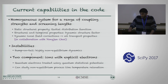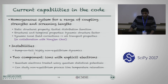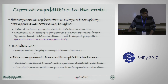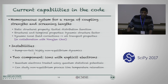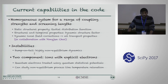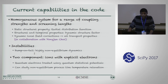The next aspect the code can compute is a bump-on-tail instability, which is a highly non-equilibrium dynamics. Finally, the code can simulate explicit electrons in addition to ions. Realistic plasmas have both ions and electrons, but electrons are difficult to treat due to their quantum nature — the code uses quantum statistical potentials for that. Interesting non-equilibrium dynamics involving electrons includes studying temperature relaxation between electrons and ions, and charged particle stopping power, which is crucial to experiments like NIF.